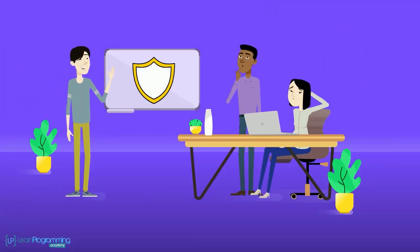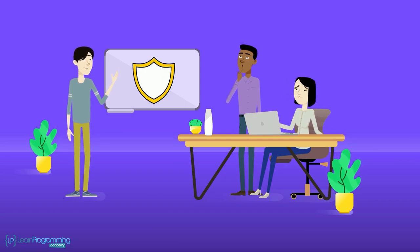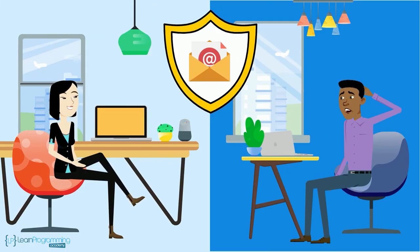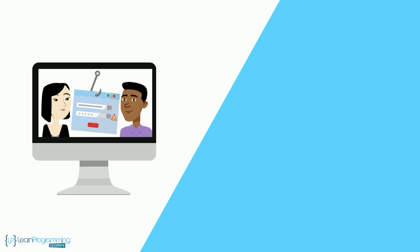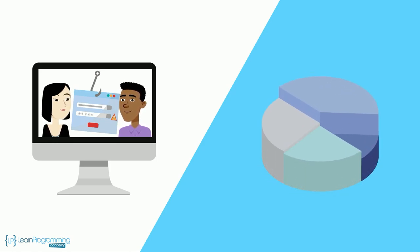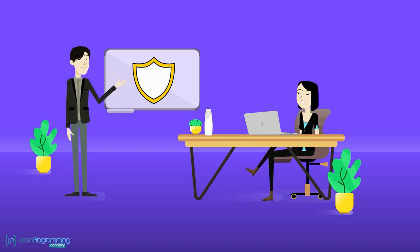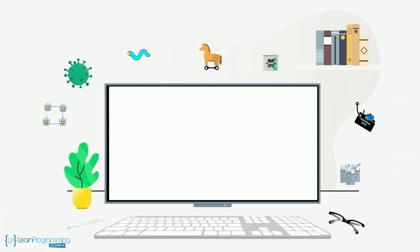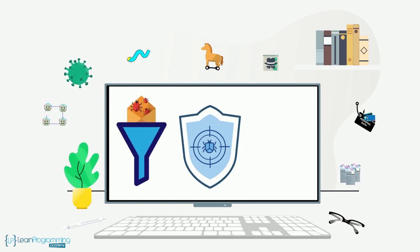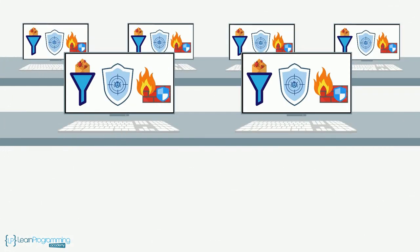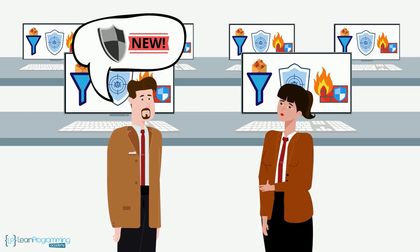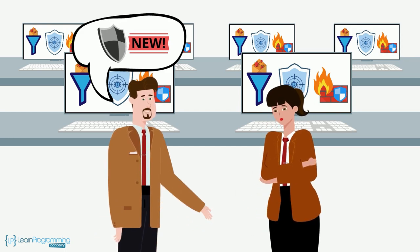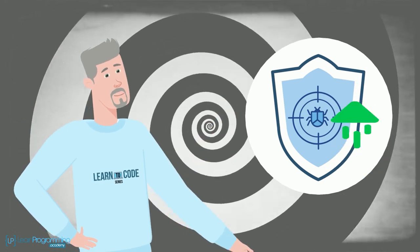There are businesses that specialise in helping other businesses train their employees to be more aware of malicious threats. These businesses are contracted to send all kinds of take-the-bait type of emails to employees, and then the business can determine who took the bait and what percentage of the bait was consumed, to provide specific training so employees are more on guard to prevent malicious attacks in the future. Other protections and preventions to guard against malware include anti-virus software, spam filters and firewall software. Businesses and individuals alike should keep that software up to date with the latest revisions.